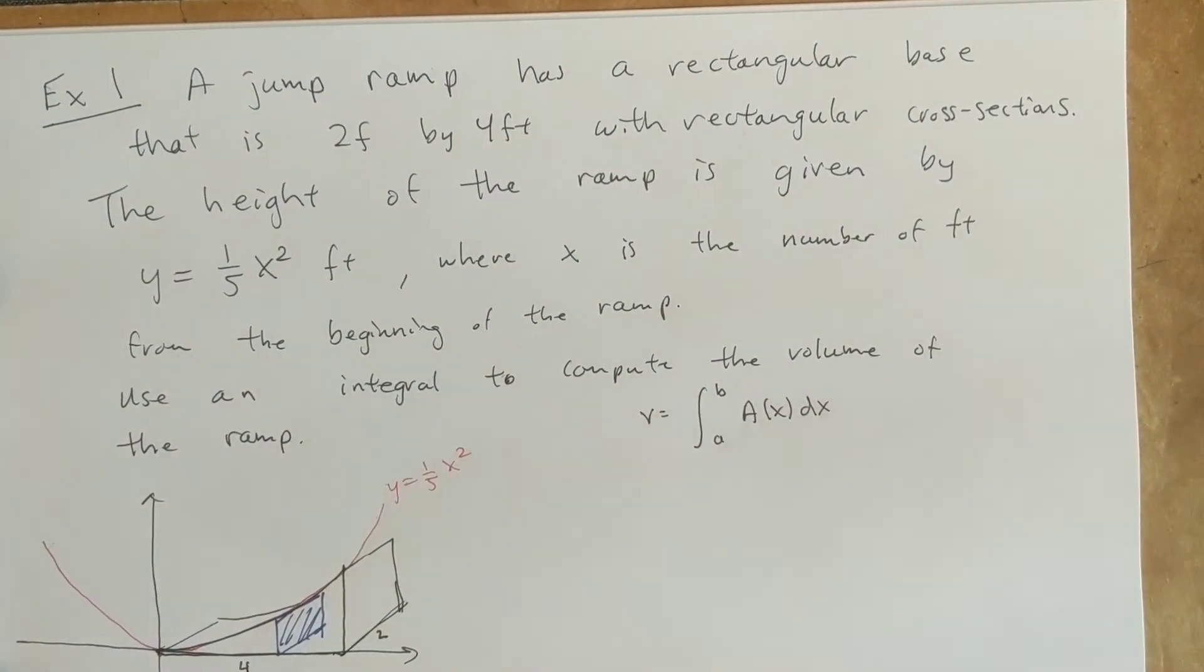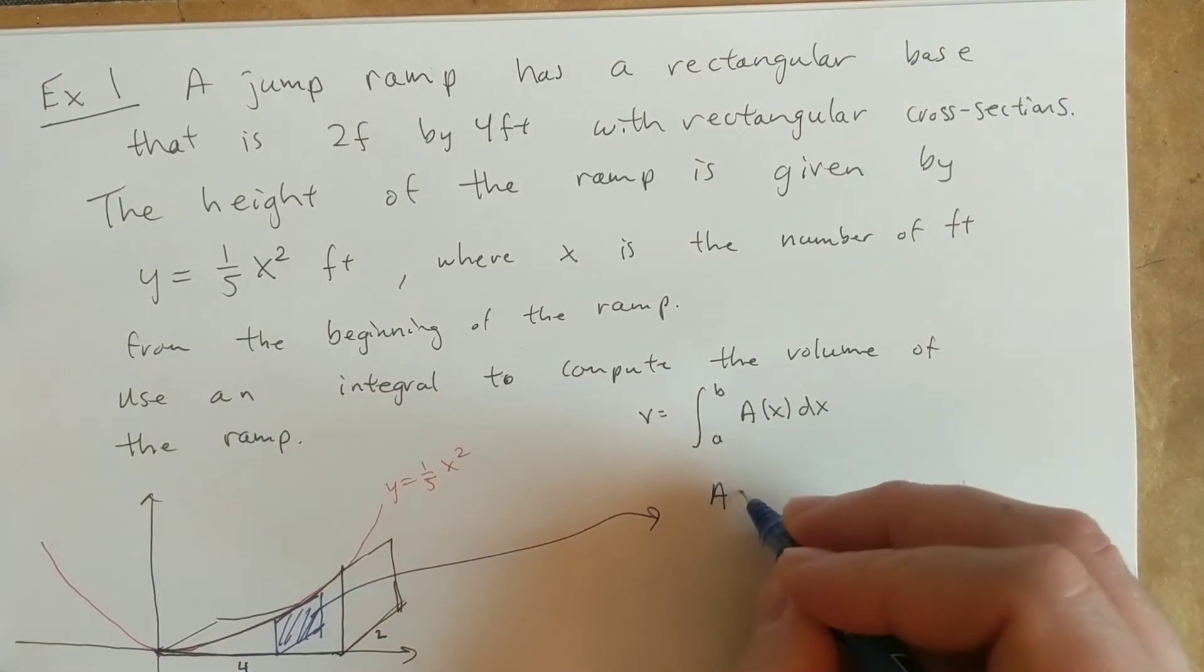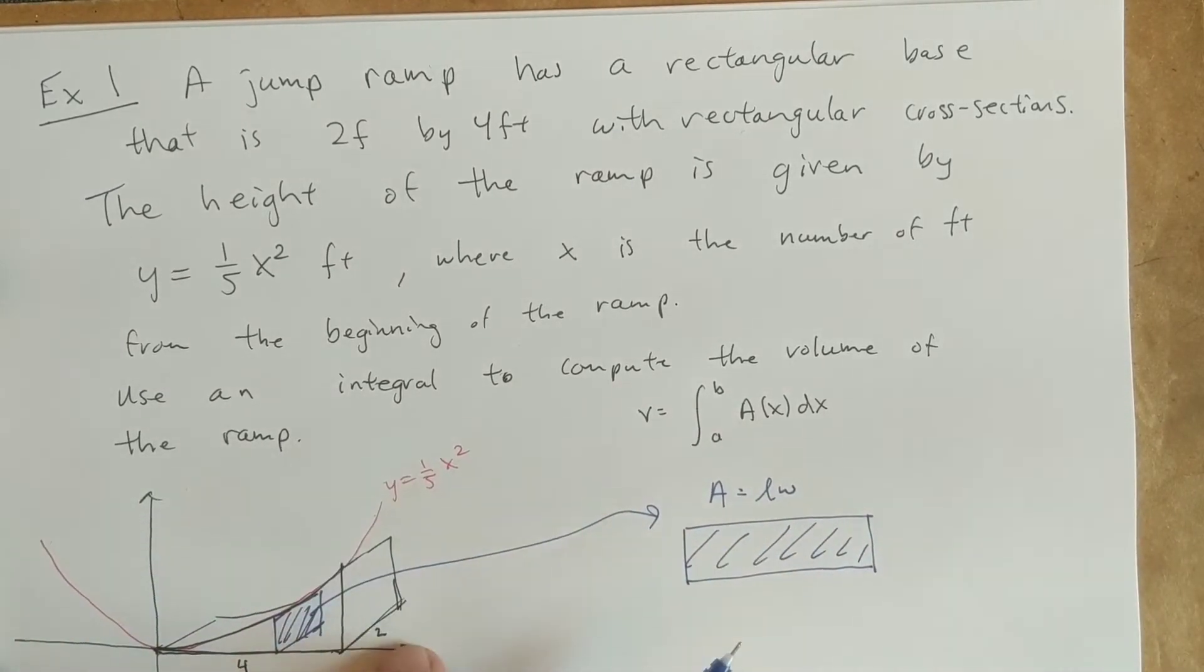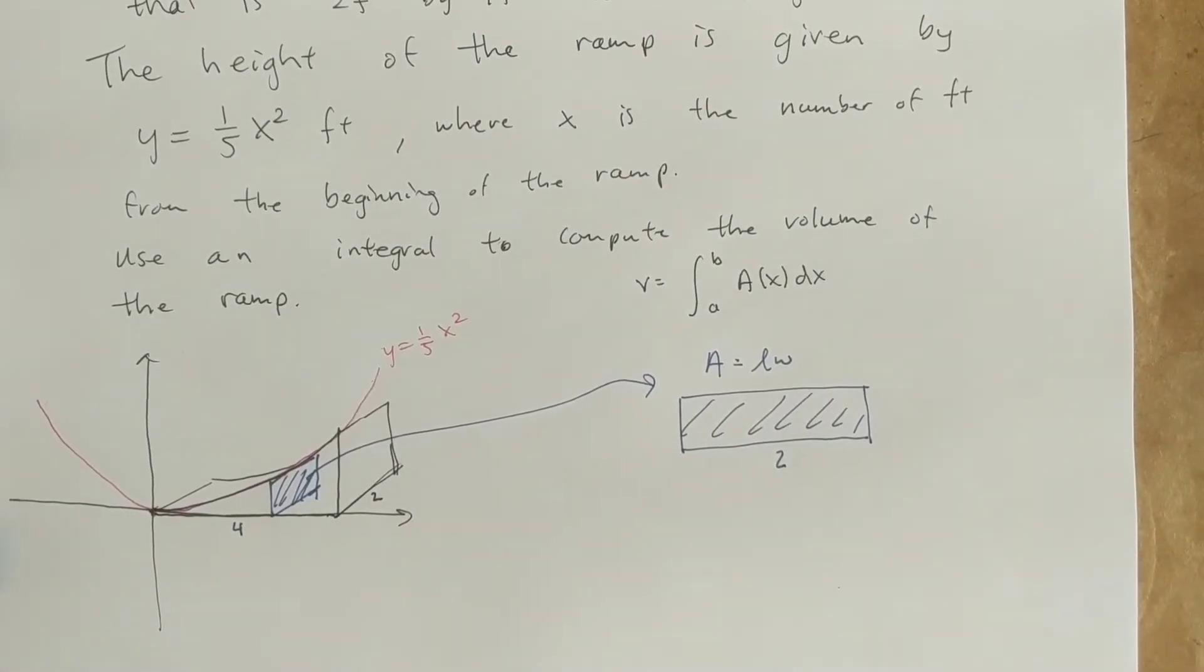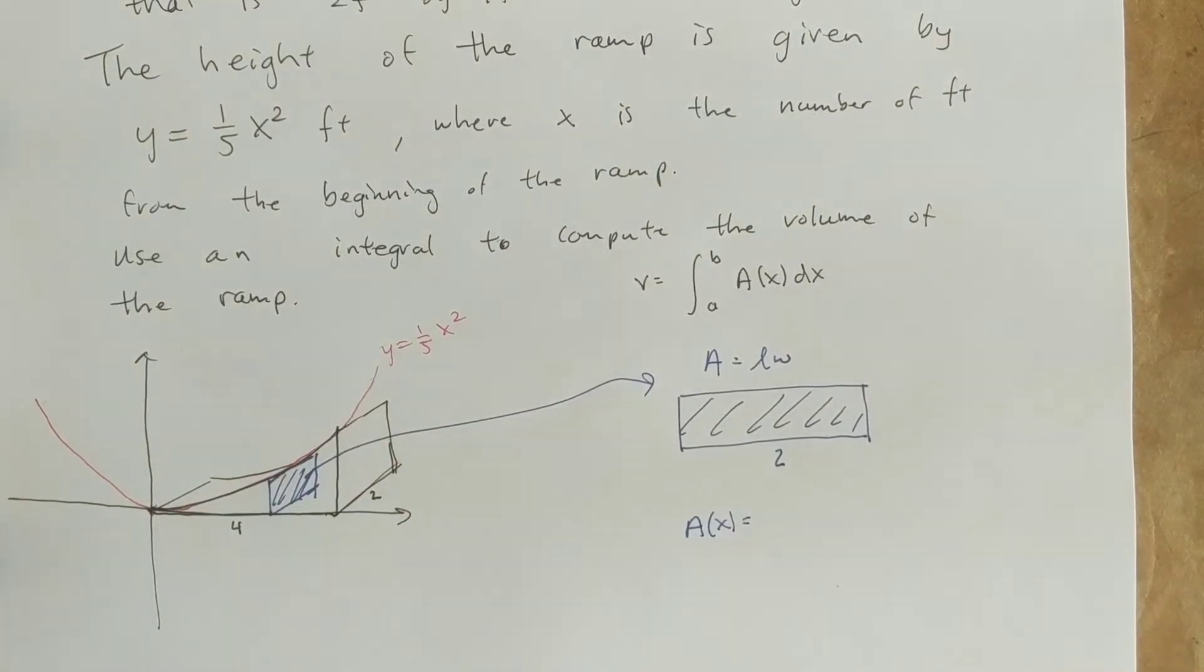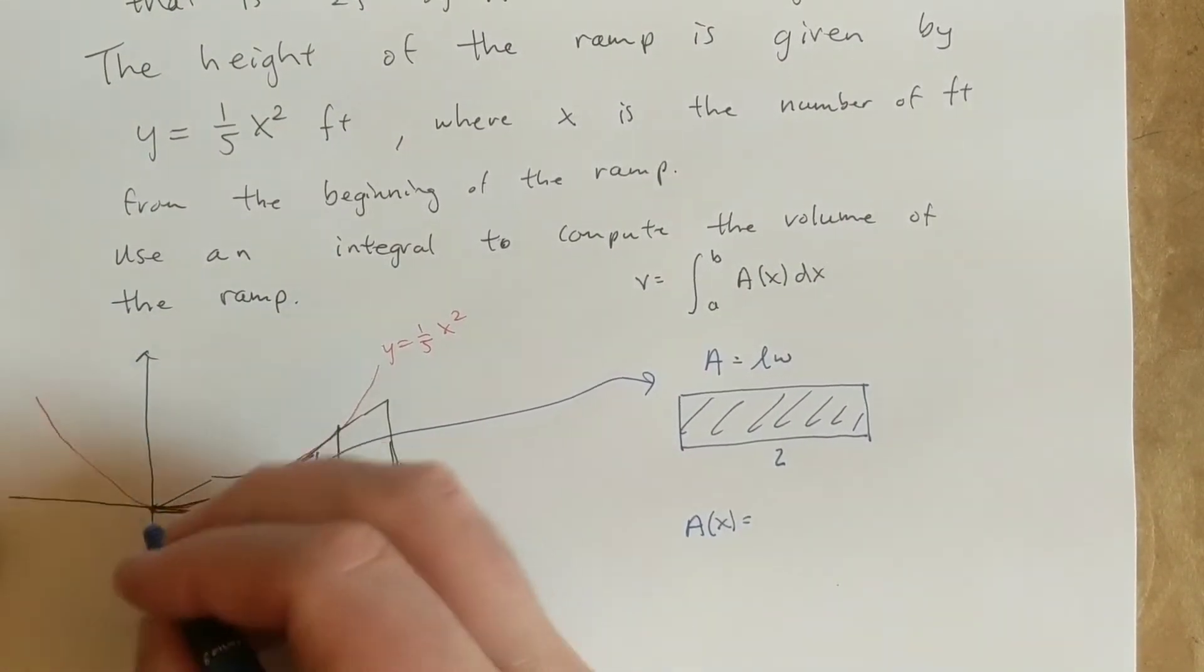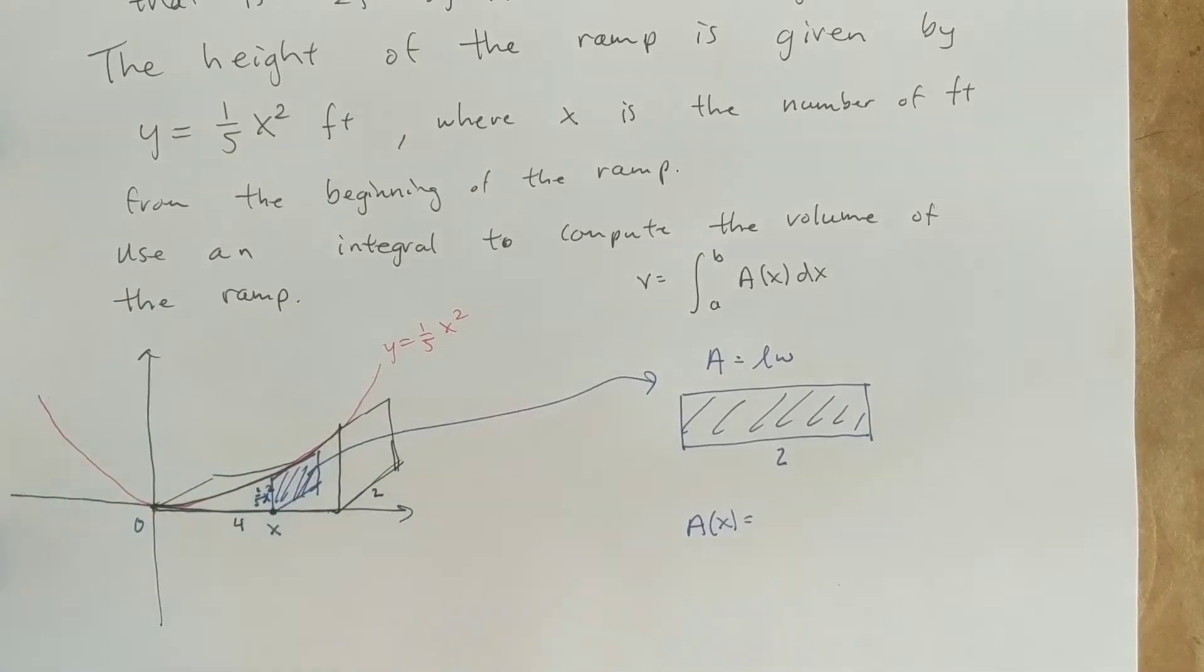Okay, so what do we need here? So all the cross-sections are rectangles, so remember the area of a rectangle is length times width. Well, we know the ramp's always two feet wide, so we know the base of this is always two feet. So what we need in order to compute this area function, this is what we're looking for, is the height of this. And the height's going to change for each value of x. But we know that if we're x feet away from the beginning, which is zero, the height is one-fifth x squared. So the height of each one of these is one-fifth x squared.